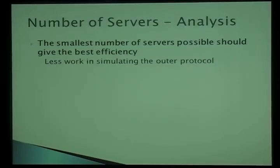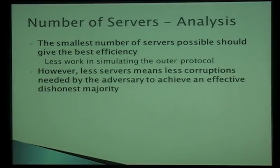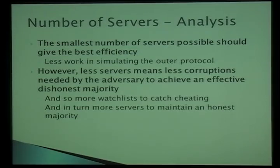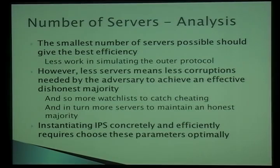Another issue is how many servers to take. Naively, fewer servers means less simulation work. However, fewer servers means the adversary must cheat in fewer inner protocols to achieve a dishonest majority, which means you need more watch lists to catch the cheating. More watch lists in turn requires more servers so the ratio stays feasible. Instantiating IPS correctly means finding the right balance between these competing parameters.